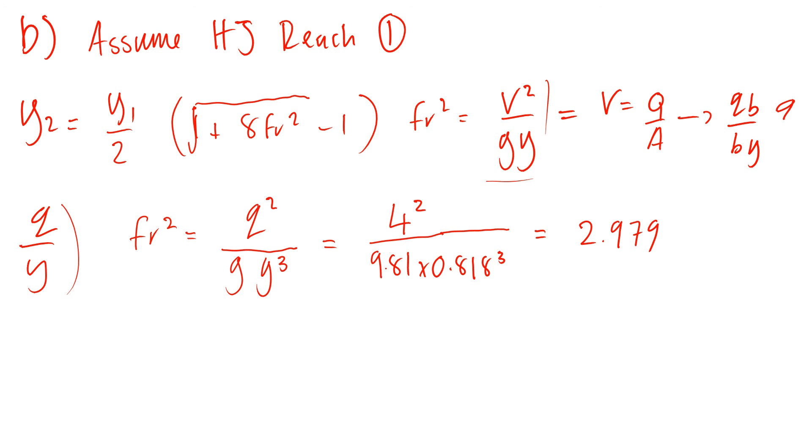Now you need to work out what Y2 is. So again, Y1 is 0.818 divided by 2 times negative 1 plus square root 1 plus 8 times 2.98, which equals 1.629 meters.